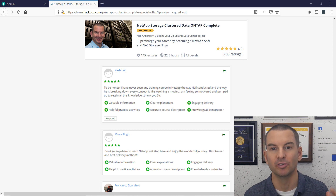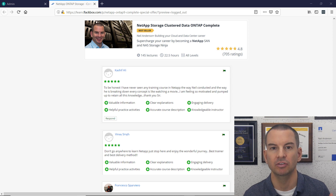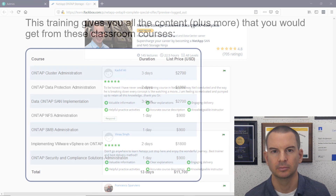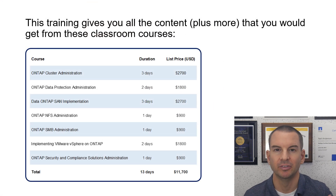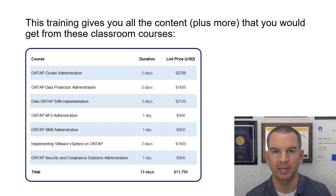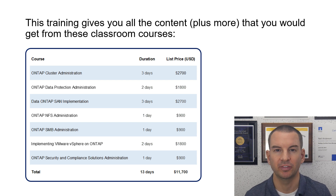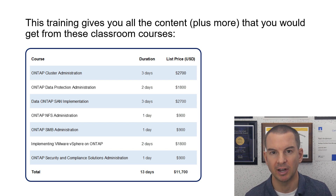And this new course blows the old one out of the water. I'm so confident that you'll get everything that you need here that I've backed the course with a full 30-day money back guarantee. You can see on your screen now the equivalent classroom training — it would take you 13 days and cost just under $12,000 to take the classroom courses. This online course actually has more information than you would get in the classroom; you're going to get much more comprehensive knowledge and skills at a fraction of the cost.